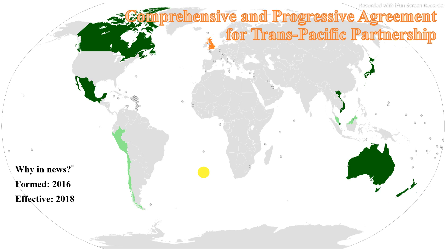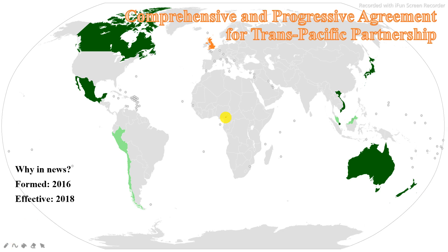Before starting the detailed description, let me tell you what kind of partnership this is. Basically, CPTPP is a kind of FTA — Free Trade Agreement. There are two things: PTA and FTA. PTA stands for Preferential Trade Agreement while FTA stands for Free Trade Agreement. There is a minor difference between the two. PTA consists of a positive list of products in which duty is to be reduced.